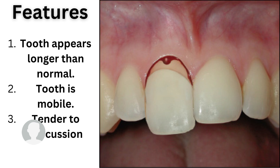The tooth will appear longer than normal, or longer than the adjacent tooth. In addition to that, the tooth will be mobile and it will be tender to percussion both vertically and laterally — meaning that when you tap on the tooth, the patient will tell you they feel pain. These are all features suggesting the patient is having extrusive luxation.